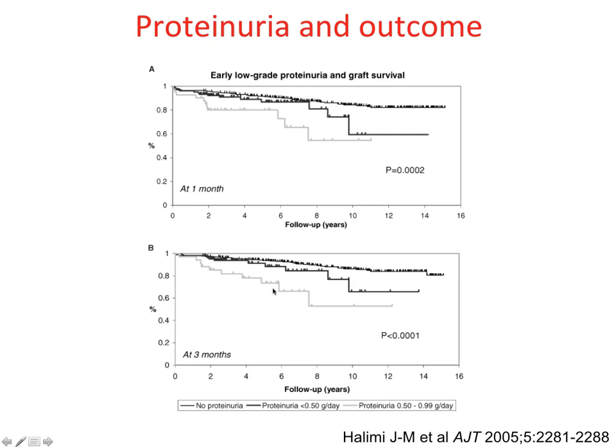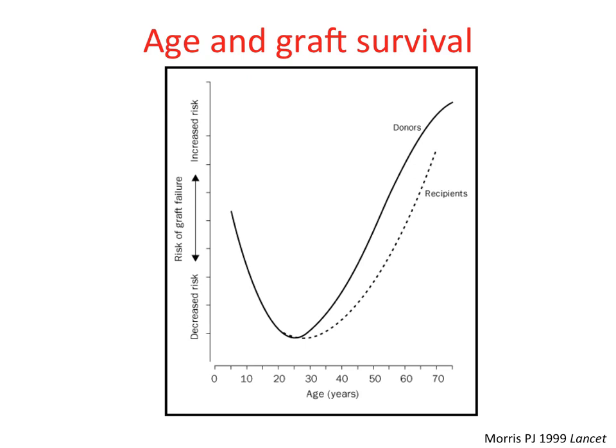Considering input factors, probably the most important is donor age. This United Kingdom data shows that the older the donor, the greater the risk of graft failure. There is also a rise in risk with very young donors, probably due to the technical difficulties in transplanting children.